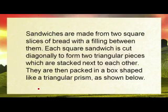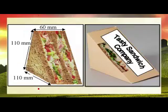So if we're working with cartons and items, let's use sandwiches as an example. Sandwiches are made from two square slices of bread with a filling between them. Each square sandwich is cut diagonally to form two triangular pieces, which are stacked next to each other. They are then packed in a box shaped like a triangular prism, as shown below.